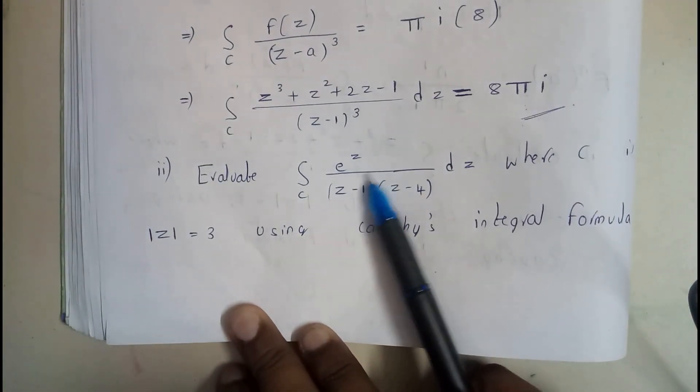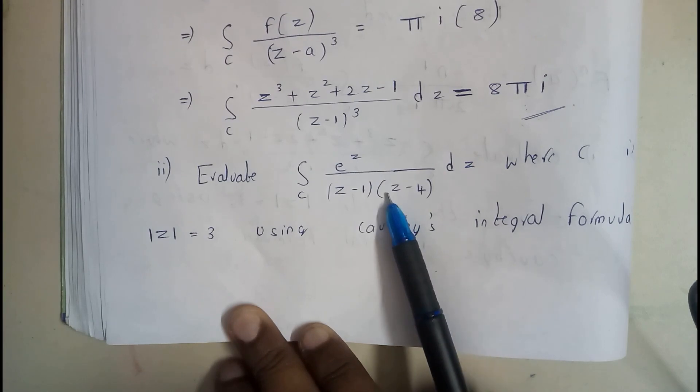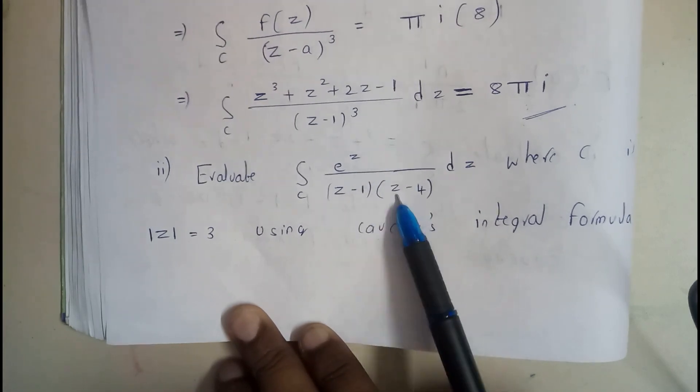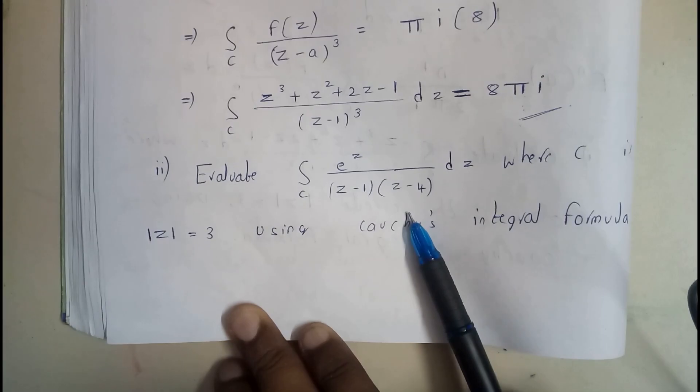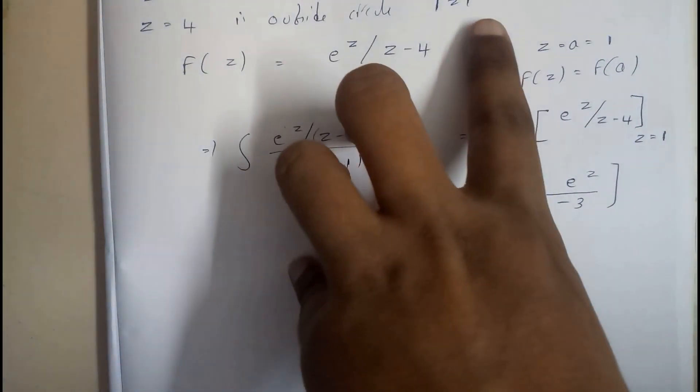next problem guys, just try to solve it. Okay, we'll be getting two singular points, one is 1 and another one is 4, and 4 is outside so we'll be neglecting that and we'll be considering only the one which is inside.